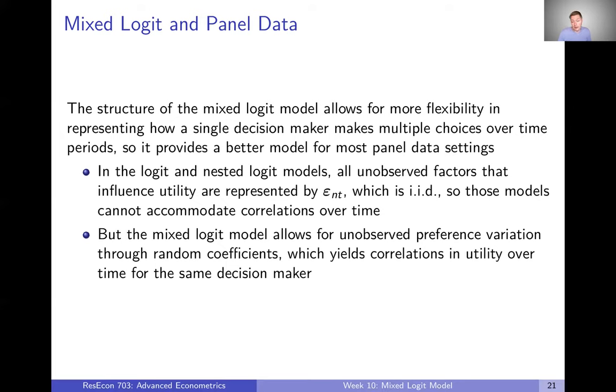But we talked about how the mixed logit model can allow for this kind of unobserved preference variation by using these random coefficients that can either represent individual specific coefficients or just flexible substitution patterns or flexible correlations of random utility. What this is going to do is yield correlations in utility over time for the same decision maker. And that's exactly what we need to think about a model realistically representing a panel data setting.